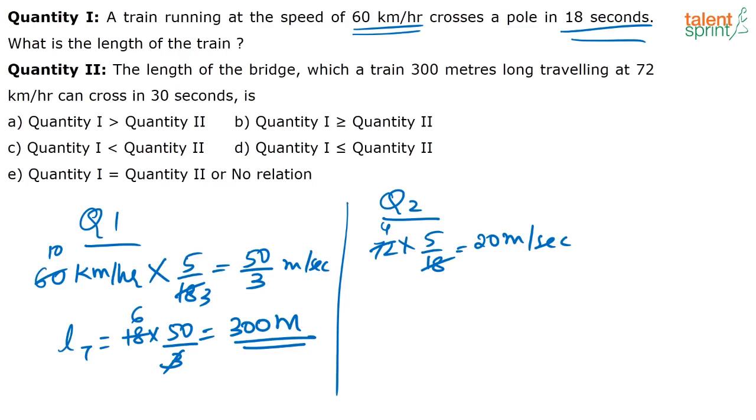So that is the speed of the train. It is given the length of the train is 300. Let us assume the length of the bridge is x meters divided by 20. That equals 30. The total distance divided by speed will give you the time it takes. So here you have to consider the length of the train and the length of the bridge.